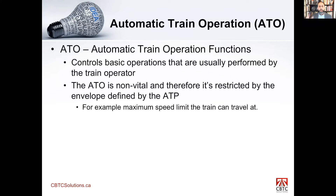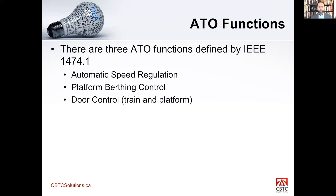There is a clear relationship between the ATO and ATP parts of the train board system — they work in unison. If anything goes wrong with the ATO, the ATP protects it. The ATO is considered a non-vital part of the train board system, but it controls everything the train driver is supposed to do, and that's essentially what makes it a driverless system.